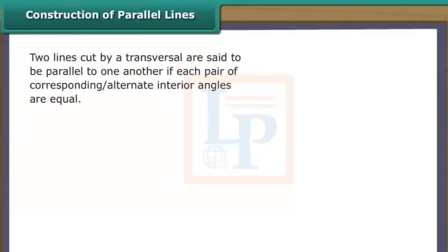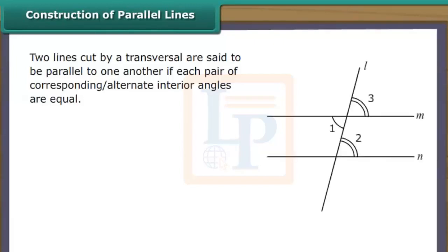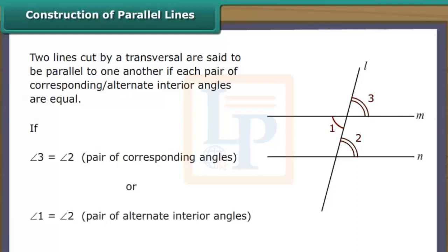Two lines cut by a transversal are said to be parallel to one another if each pair of corresponding alternate interior angles are equal. In the figure, if angle 3 is equal to angle 2, or angle 1 is equal to angle 2, line M is said to be parallel to N.